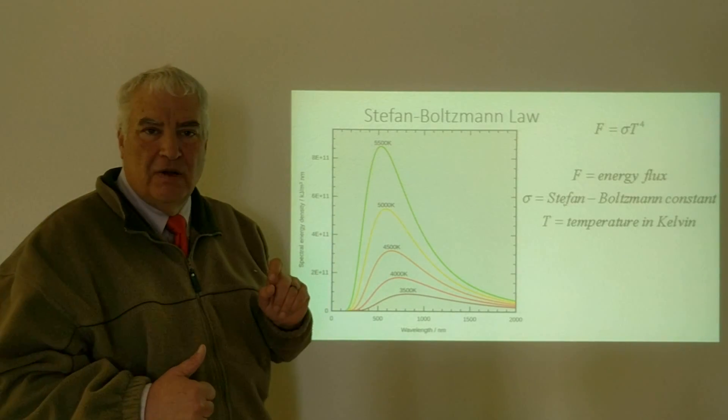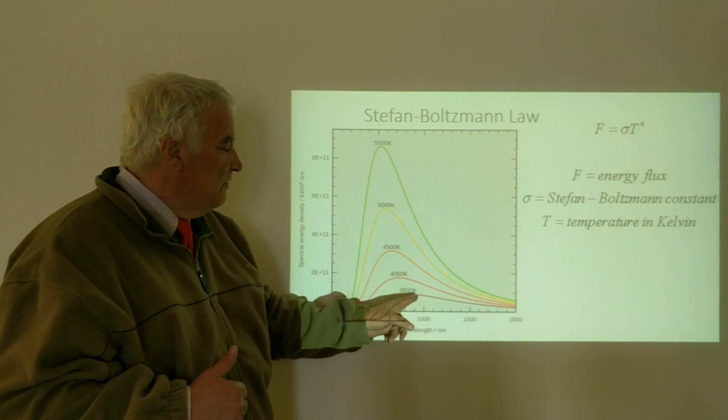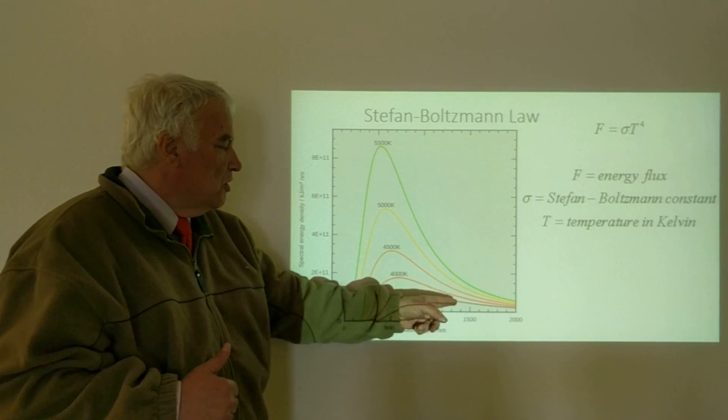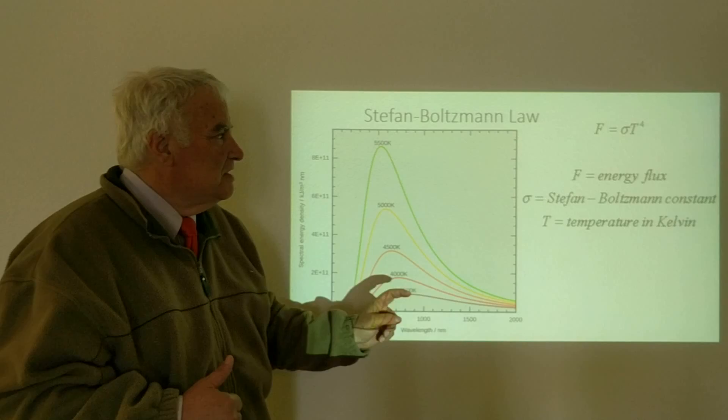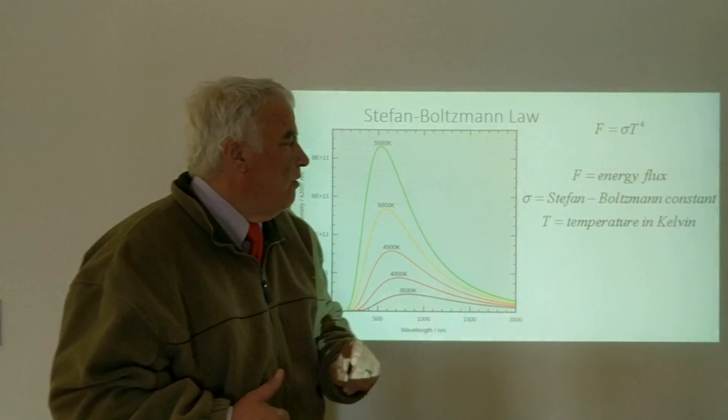Here is a star of 3500 Kelvin, 4000, 4500, 5000, and 5500. Only a little bit of increase in temperature corresponds to a dramatic change in brightness. This is because of the fourth power there.